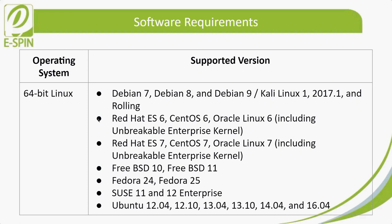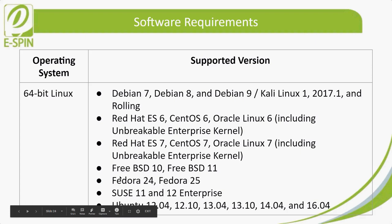For 64-bit Linux, supported versions include: Debian 7 through Debian 9, and Kali Linux 1, 2017.1, and rolling; Red Hat ES6, CentOS 6, and Oracle Linux 6 including Unbreakable Enterprise Kernel; Red Hat ES7, CentOS 7, and Oracle Linux 7 including Unbreakable Enterprise Kernel; FreeBSD 10 and FreeBSD 11; Fedora 24 and Fedora 25; SUSE 11 and 12 Enterprise; and Ubuntu 12.04, 12.10, 13.04, 13.10, 14.04, and 16.04.